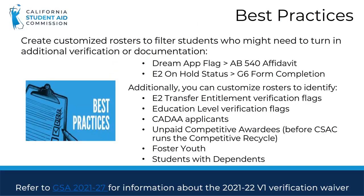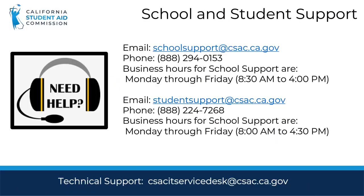Here are a few best practices. Create customized rosters to filter students that might need to turn in additional verification. For example, you can select the DREAM Act flag to follow up with students that still need to submit an AB 540 Affidavit, or you can select E2 On Hold Status to follow up with students that still need to submit the G6 Transfer Entitlement Form. Additionally, you can customize rosters to identify foster youth students, students with dependents, or unpaid competitive students. High school counselors, administrators, and financial aid administrators should contact the School Support Team or the IT Service Desk at the Commission if they need further assistance.